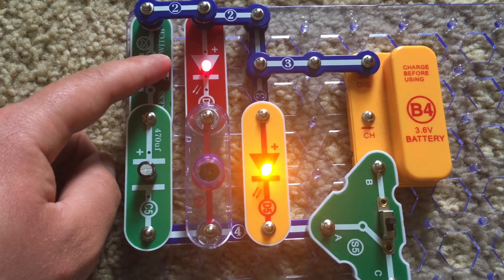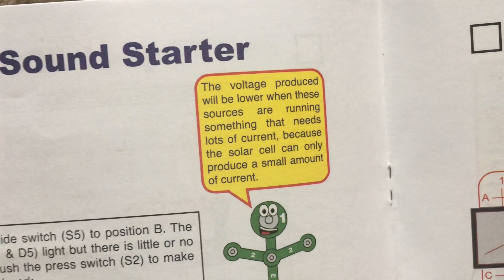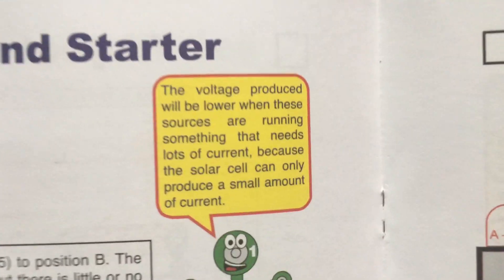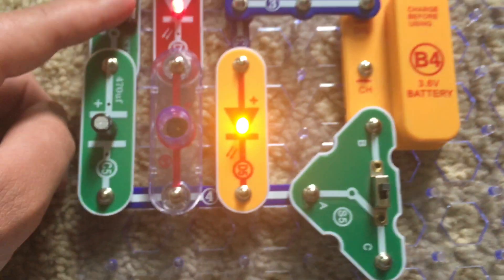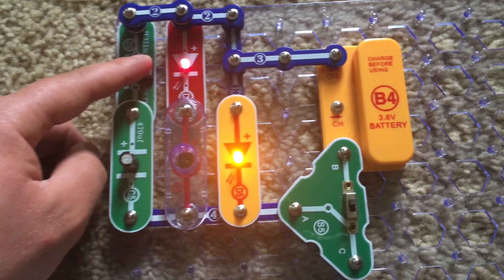And the voltage produced will be lower when these sources are running something that needs lots of current, since the solar cell can only produce a small amount of current.